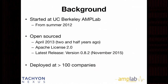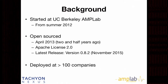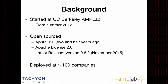Here's the background. We started Tachyon from AmpLab UC Berkeley in the summer of 2012. The project got open-sourced the following year, in April 2013 — about two and a half years ago. It's open-sourced under the Apache 2.0 license. The latest release is version 0.8.2 this month, and the project has been deployed at more than 100 companies.